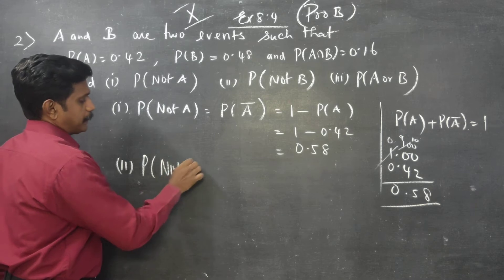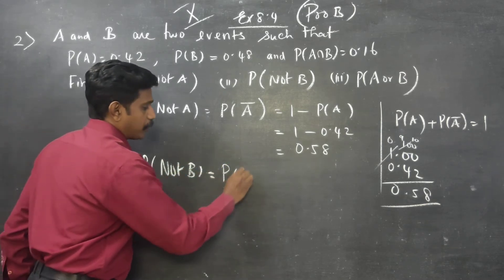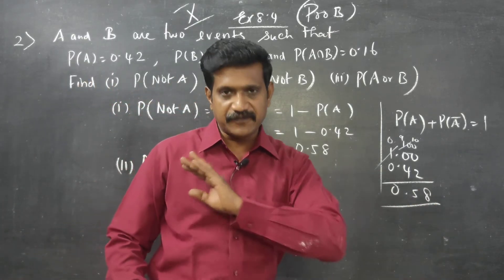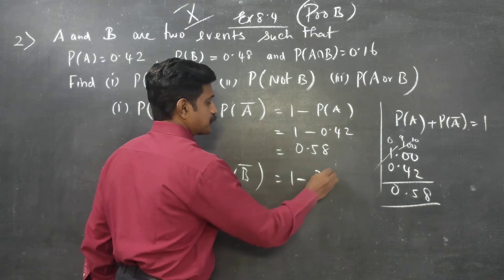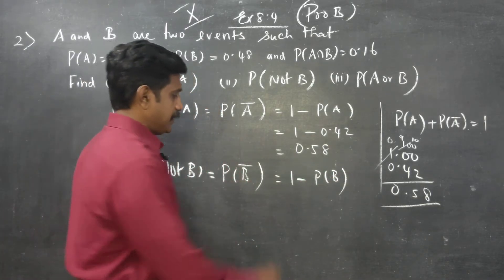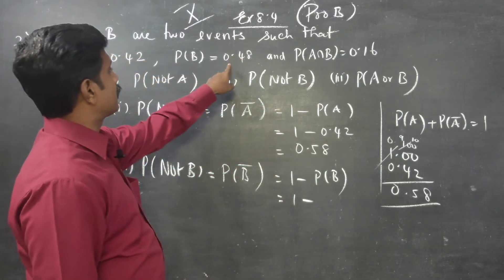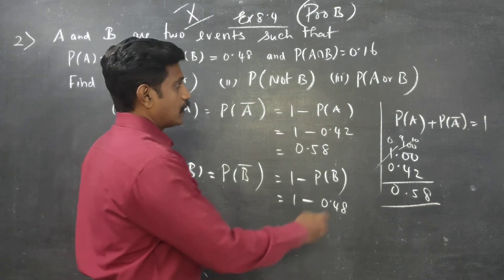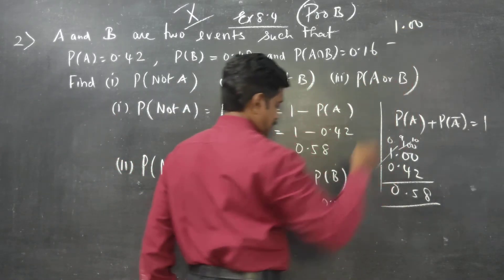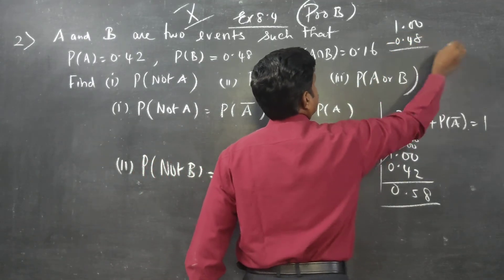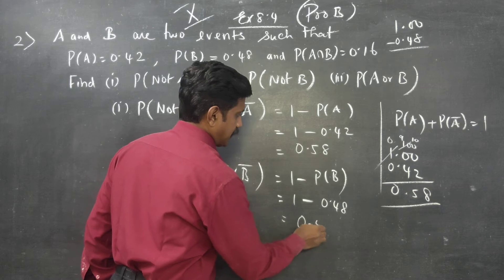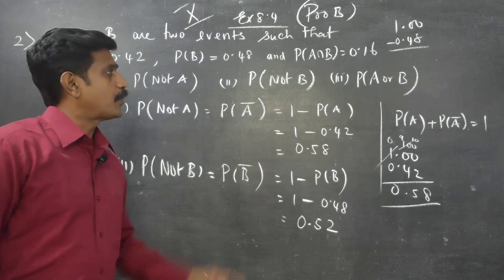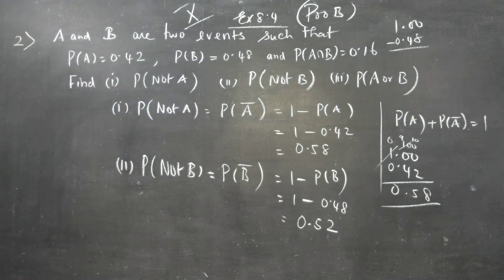Second question: probability of not B. Not B means probability of B dash. The formula will be 1 minus P(B), which is 1 minus 0.48. The answer is 0.52.